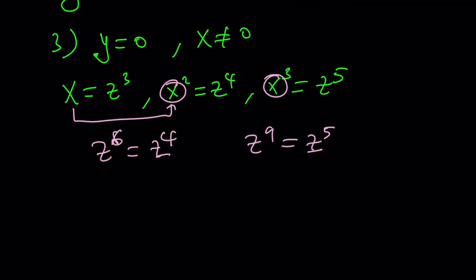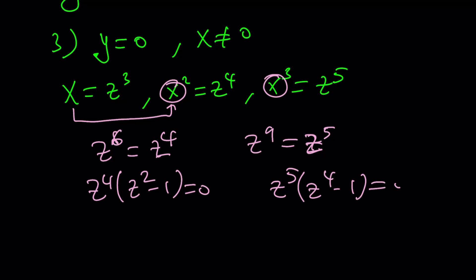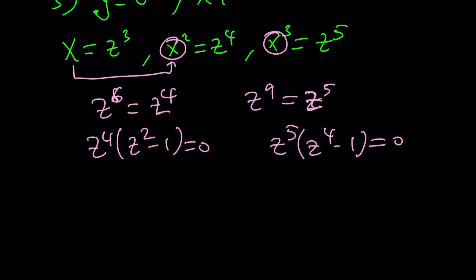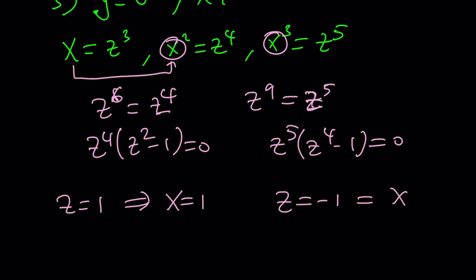From here we get two equations. By factoring, we take out z to the fourth to get z squared minus one equals zero, and we take out z to the fifth to get z to the fourth minus one equals zero. These tell us z can be zero, one, or negative one. But z cannot be zero, because that would imply x equals zero. Therefore z is either one or negative one. If z is one, then x is one; if z is negative one, then x is also negative one.